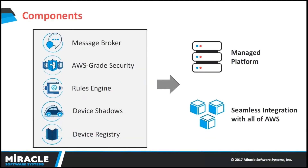Moving on to components associated with AWS IoT: the first is the message broker. The message broker is responsible for publish and subscribe from the devices or sensors to the platform, or from a mobile app. Next is AWS IoT security — one of the major advantages of the platform — where devices connect securely using keys and certificates to identify that the device is registered in AWS IoT Platform.